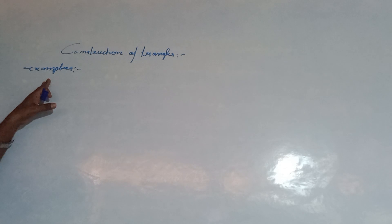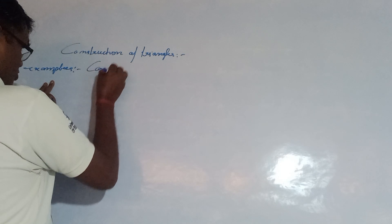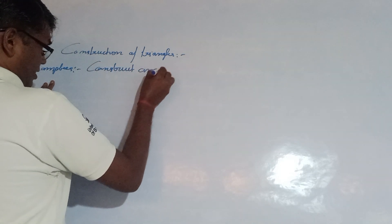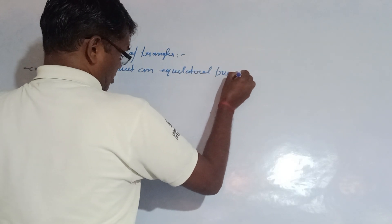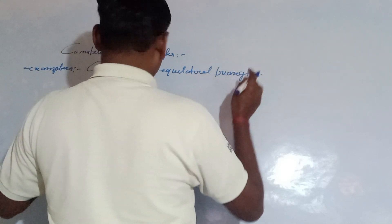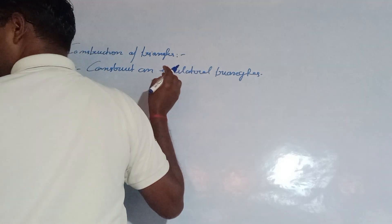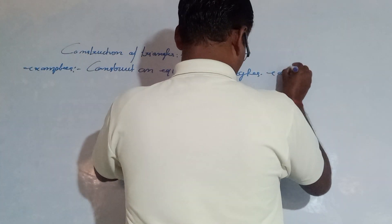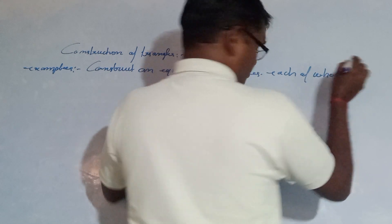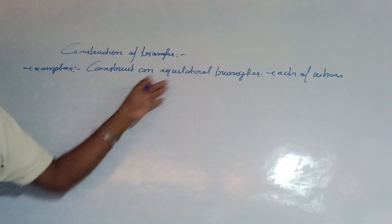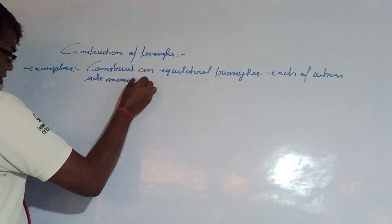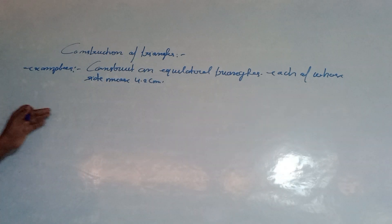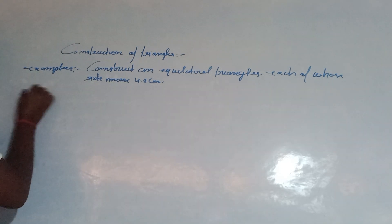Construct an equilateral triangle, each of whose sides measures 4.2 cm. Steps of construction.